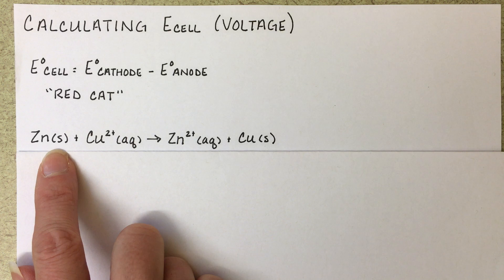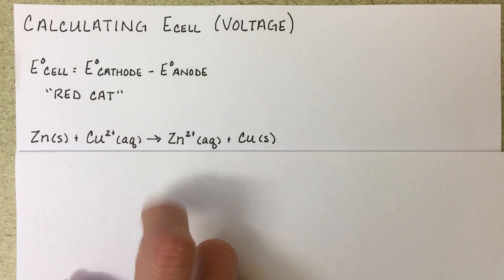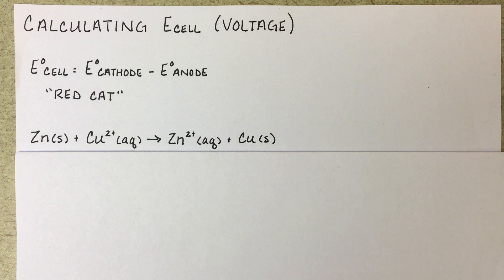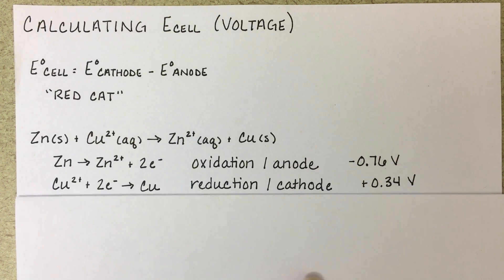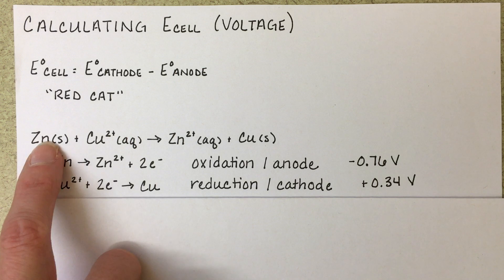If we wanted to calculate the voltage of this cell, our first step would be to figure out which half reaction is taking place at the cathode and which half reaction is taking place at the anode. So we're going to start by identifying the two half reactions, writing them out.